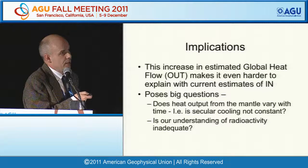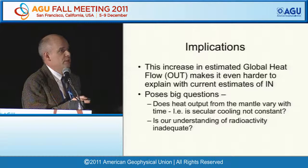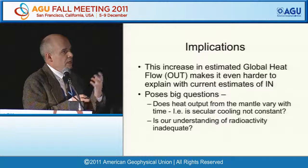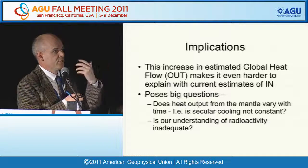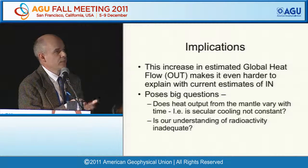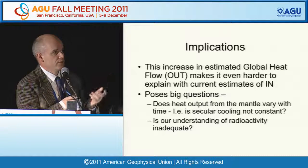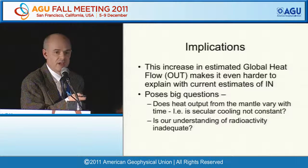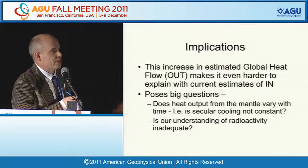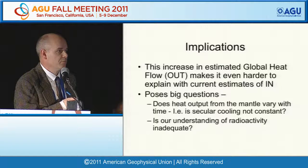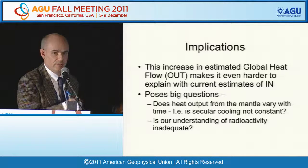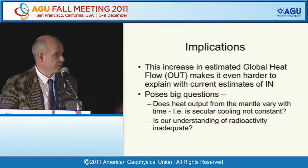Returning to implications: this increase in estimated global heat flux makes it even harder to explain with our current understanding of the inputs. Making a best estimate for radioactivity in the continents and mantle, plus an estimate for core heat flux, the remainder that must come from mantle secular cooling tends to be on the high side. This potentially poses questions: does heat output from the mantle vary with time? Is secular cooling constant? Or is our understanding of radioactivity inadequate?